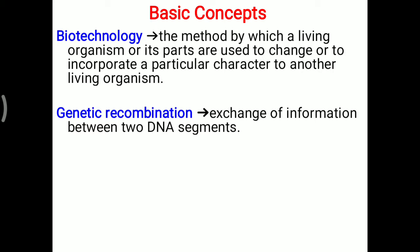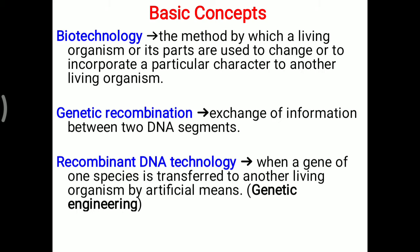Suppose an organism does not have a particular gene; that gene is added with the help of recombination technology — recombinant DNA technology. When one gene of one species is transferred to another living organism by artificial means, that is called recombinant DNA technology or genetic engineering. The capacity to produce a particular protein is built into an organism by adding a particular gene by artificial means.